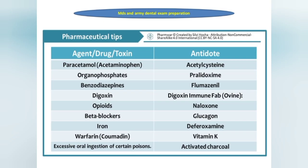Antidotes of different drugs: Paracetamol — acetylcysteine. Organophosphates — pralidoxime. Benzodiazepines — flumazenil. Digoxin — digoxin immune Fab. Opioids — naloxone. Beta blockers — glucagon. Iron — desferrioxamine. Warfarin — vitamin K. For certain oral poisons — activated charcoal. Fluoride antidote — milk.